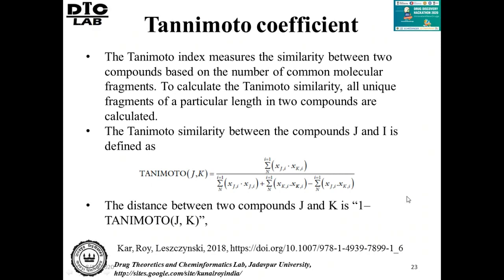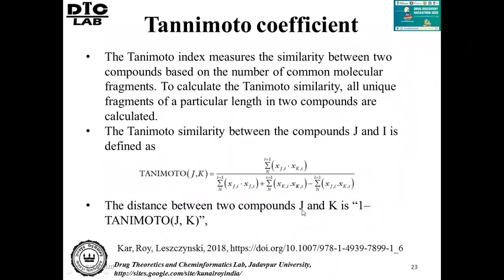Tanimoto coefficient is a measure of similarity. We can measure similarity between two compounds by Tanimoto coefficient, which compares the number of common molecular fragments between two compounds. The distance between two compounds G and K is 1 minus the Tanimoto coefficient between those two compounds. If the level of similarity is higher, then the test compound will be within the domain; if lower, it is outside the domain.